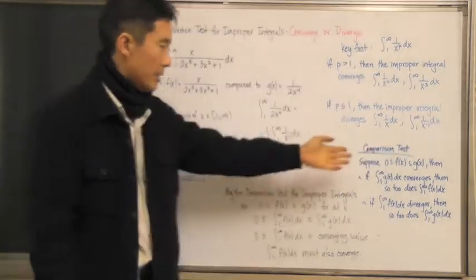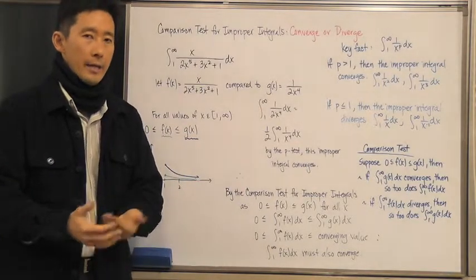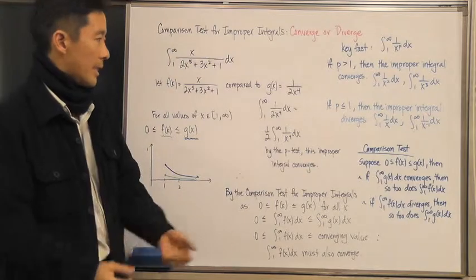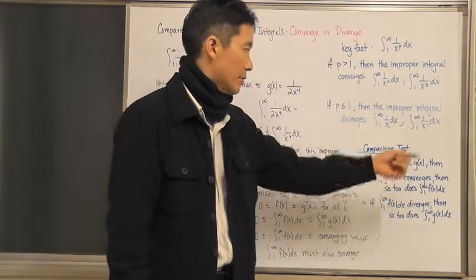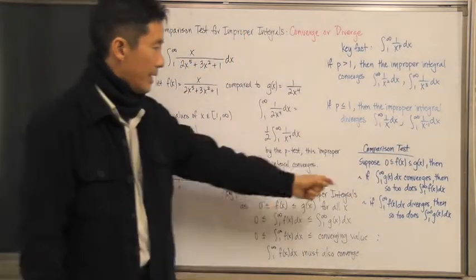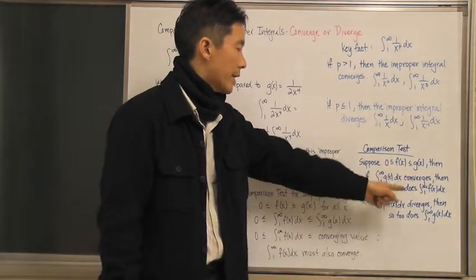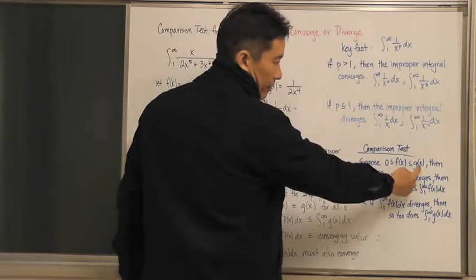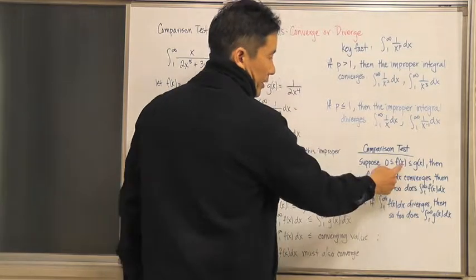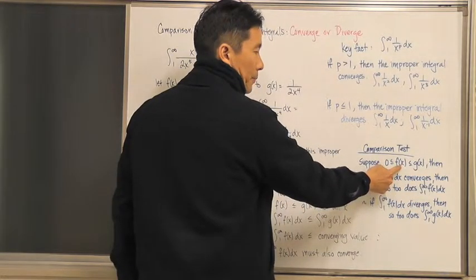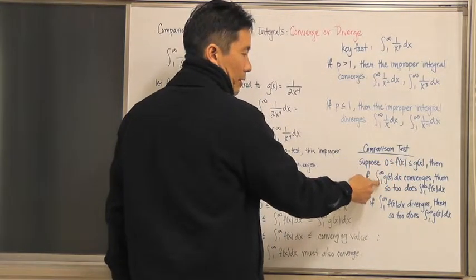Let's look at the formal comparison test. Suppose that 0 ≤ f(x) ≤ g(x) for all x in the domain. Then if the integral from 1 to infinity of g(x) dx converges, the integral from 1 to infinity of f(x) dx converges as well. If the larger function's integral converges, the smaller one must converge too.